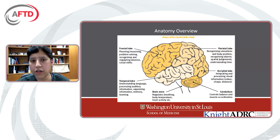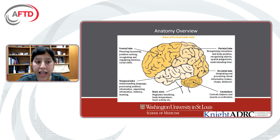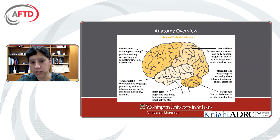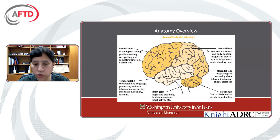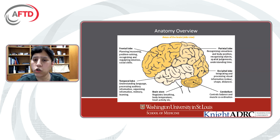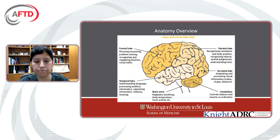To bring it all together, one last cartoon brings all the lobes together. In the front, we see the frontal lobe — the planning, the ABC business, and the regulating of our emotions and our social skills. Just below that is the temporal lobe — all that language information and memory. We'll talk briefly about the parietal lobe in the top right, which has to do with our understanding of where we are in 3D space and how we interpret sensation.